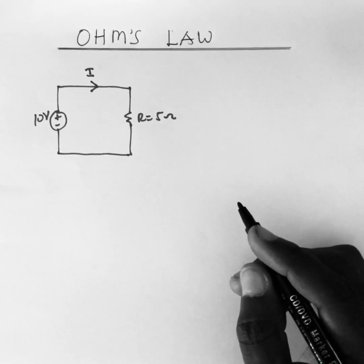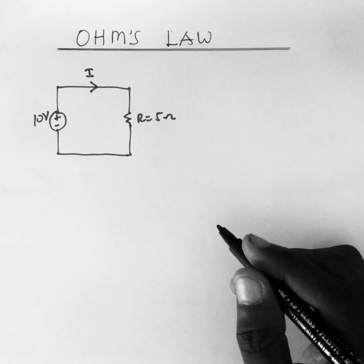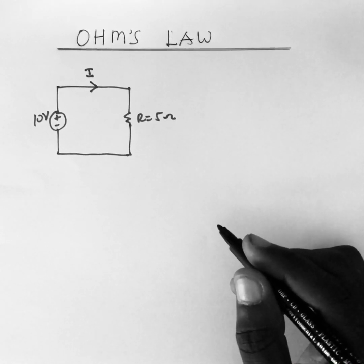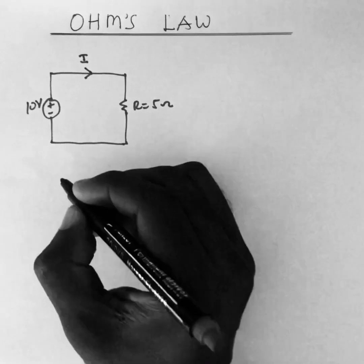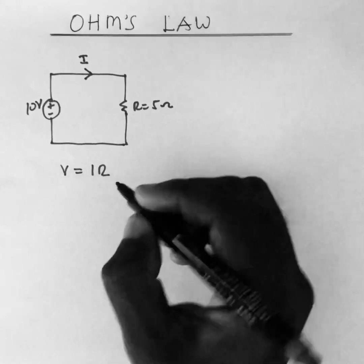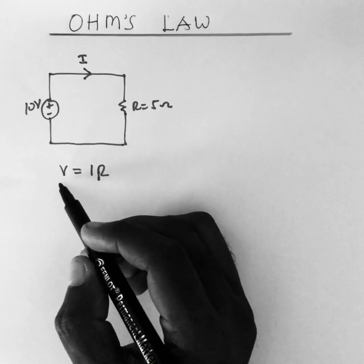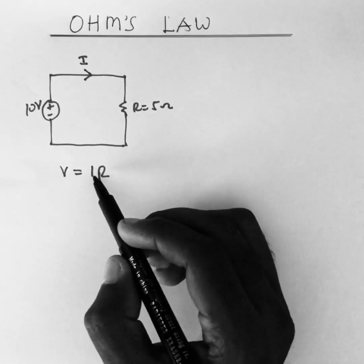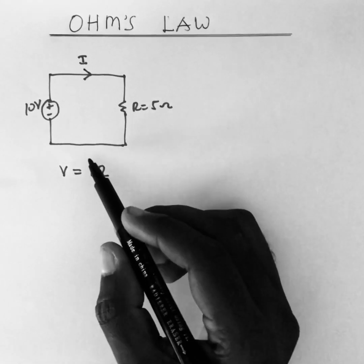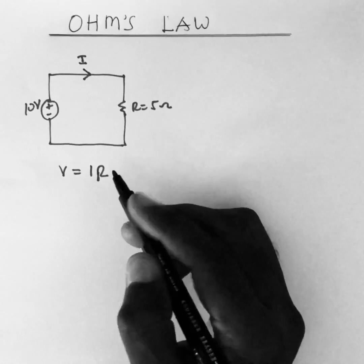Ohm's Law in simple terms states that the voltage across a resistor is directly proportional to the current that flows through it, and it is given by the expression v is equal to ir, where v is the voltage across the resistor, i is the current flowing through the resistor, and r is the resistance of the resistor.